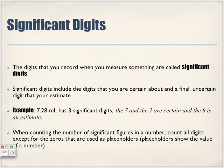For example, 8.25 centimeters — that five at the end was uncertain, but we were very certain about the 8.2. So we have the following example: 7.28 milliliters has three significant digits. The 7 and the 2 are certain, and the 8 is our estimate — our uncertain digit. We are certain for the 7.2, but uncertain about that 8.